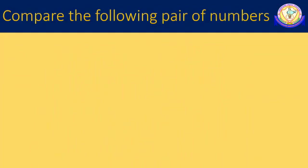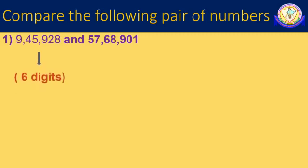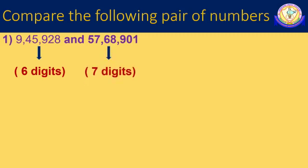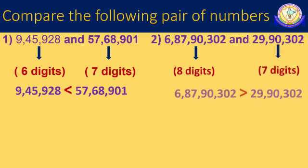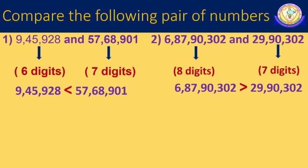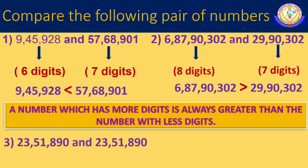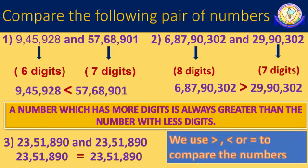Comparing numbers with an unequal number of digits. In the first example, 9,45,928 has 6 digits and 57,68,901 has 7 digits. A number with fewer digits is always smaller than the other number. Therefore, 9,45,928 is smaller than 57,68,901. In the second example, the first number has 8 digits whereas the second has 7 digits. Therefore, 6 crore 87,90,302 is greater than 29,90,302. In the third example, both numbers are the same, so they are equal. We use greater, lesser, or equal to compare numbers.